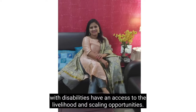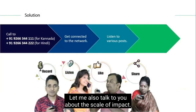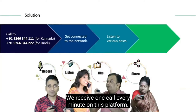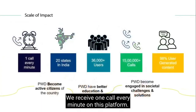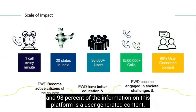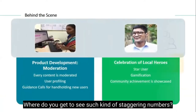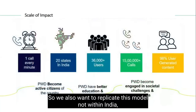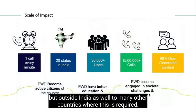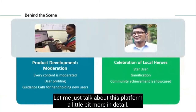Today 52% of people with disabilities have access to livelihood and skilling opportunities. When it comes to the scale of impact, we receive one call every minute on this platform. We have reached out to 20 states of India, we have 36,000 users, and 98% of the information on this platform is user-generated content.